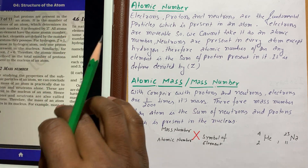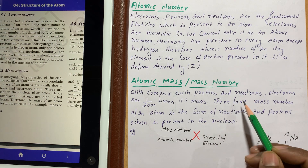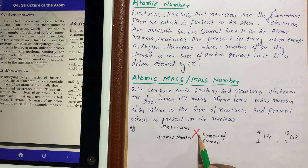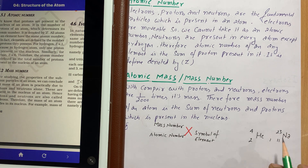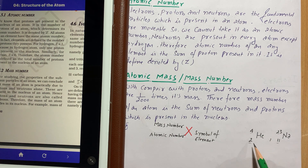When we add protons and neutrons together, it gives us the mass number. When we write a symbol, we represent the atomic number below and the mass number above the symbol. For example, helium has atomic number 2 and mass number 4. Sodium has atomic number 11 and mass number 23.